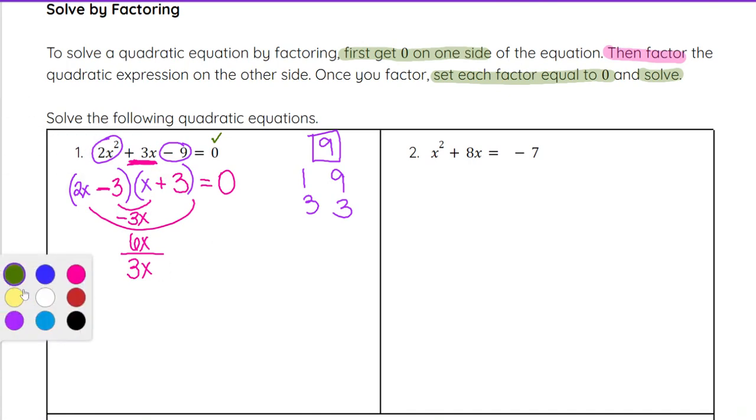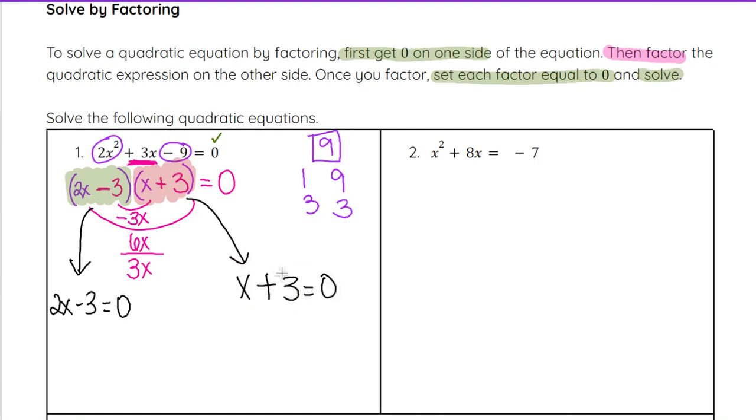Once we have it factored, that's what we've learned up until this point. Once we have it factored, we take each factor and we set it equal to 0. We're going to take 2x minus 3 and set it equal to 0 and solve for x there, and that will give us one solution.